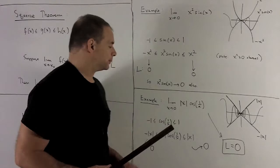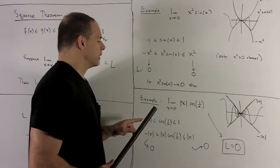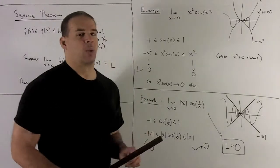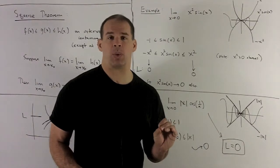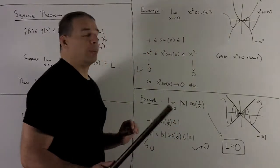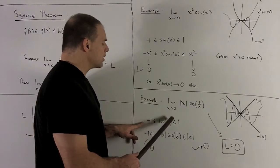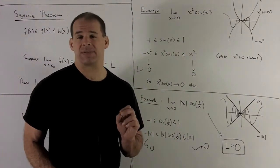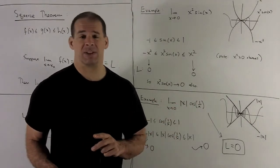Let's try an example where things aren't so clear: the limit as x goes to 0 of |x| cos(1/x). If you try sticking zero in, you're fine in the first part, but in the second part you have cosine of 1/0, which doesn't make any sense numerically. Same procedure as before: cosine of whatever, as long as it's defined, gives a value between −1 and 1. Cosine gives the x-value on the unit circle — those x-values are at most 1 and at least −1.